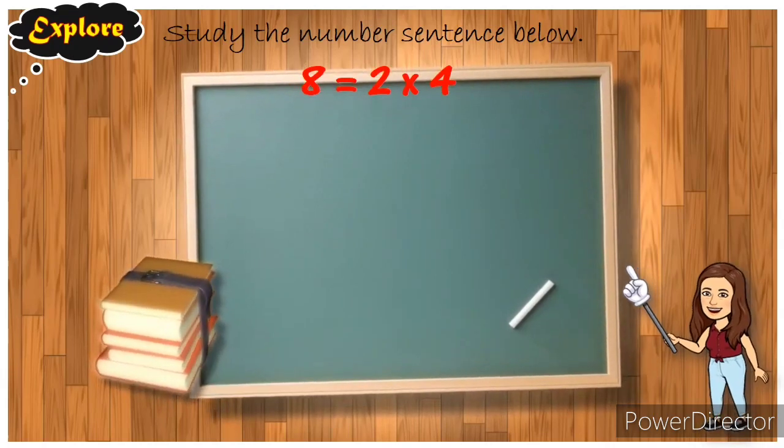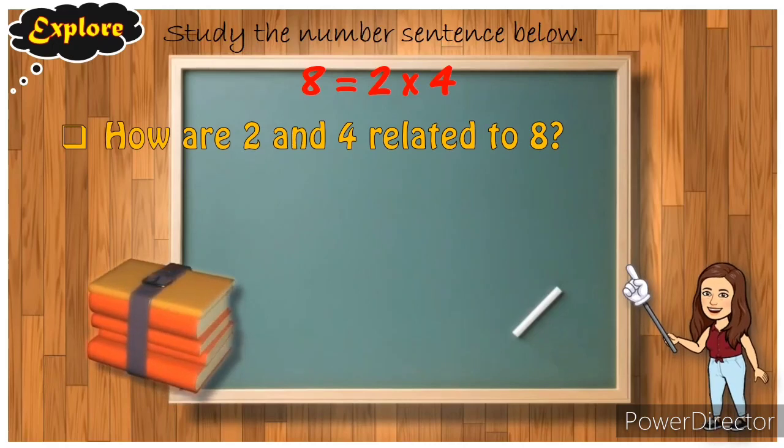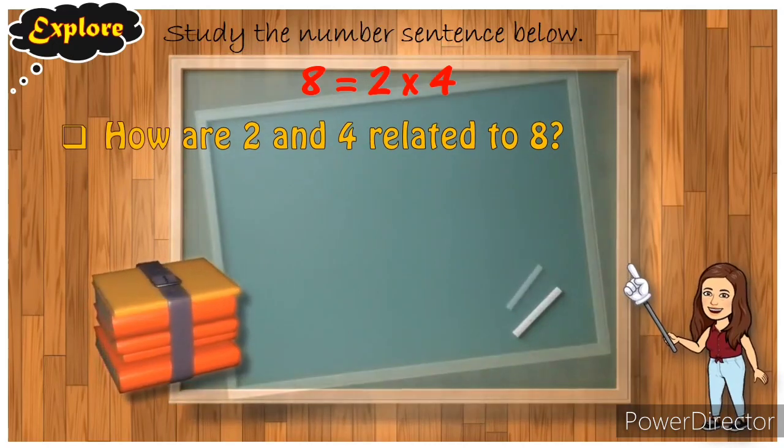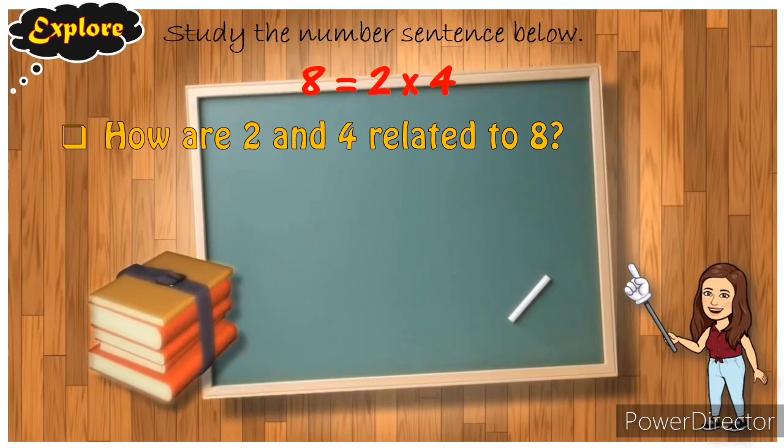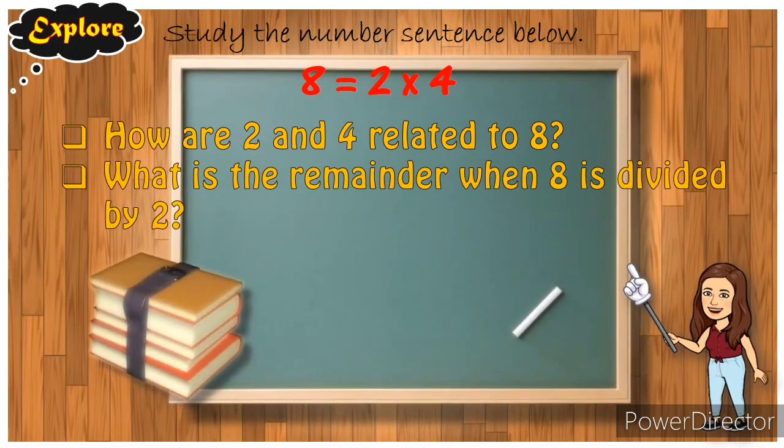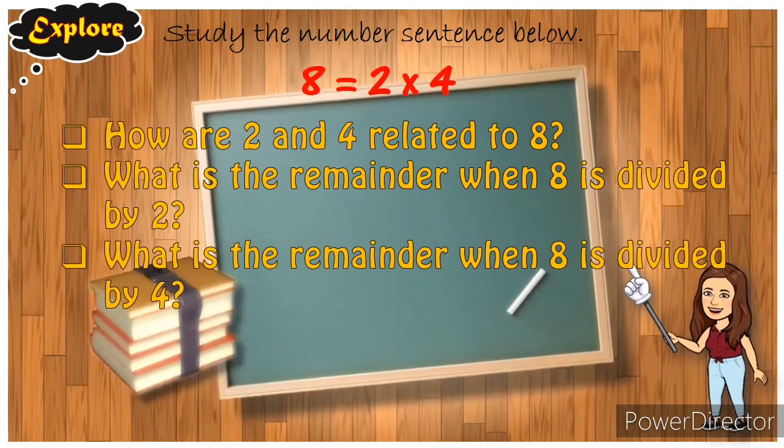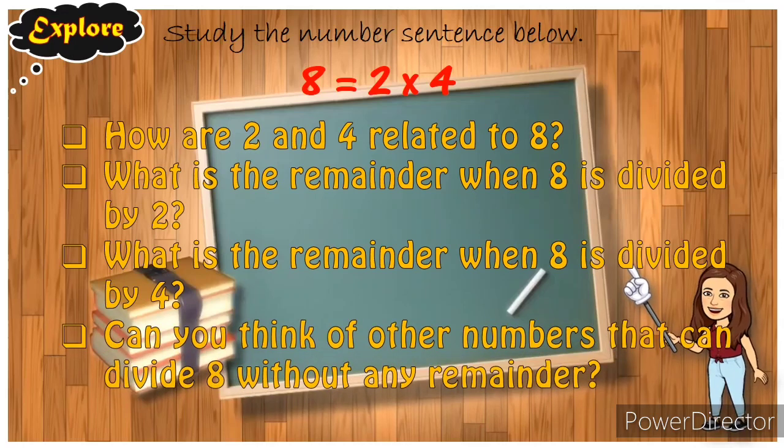Study the number sentence below. We have 8 equals 2 times 4. The questions are: How are 2 and 4 related to 8? What is the remainder when 8 is divided by 2? And what is the remainder when 8 is divided by 4? Can you think of other numbers that can divide 8 without any remainder? We'll find out later.